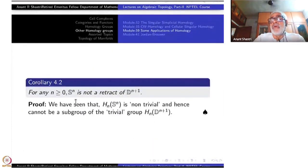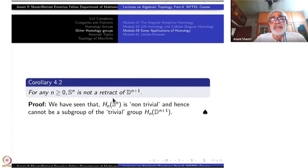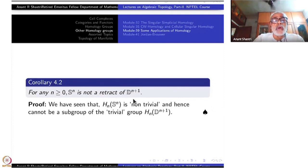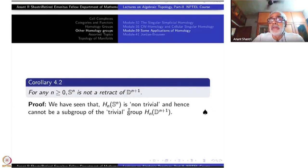For any n greater than or equal to 0, S^n is not a retract of D^(n+1). This sounds like a negative result but is actually a very positive result. Remember this was the starting point in simplicial approximation and what is called Sperner's Lemma, where we proved Brouwer's fixed point theorem and so on. Here it comes very easily — no Sperner's Lemma — though of course we have to use the homology machinery.